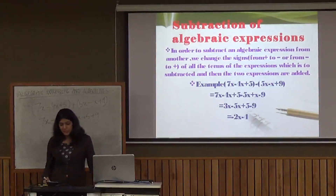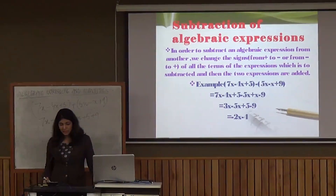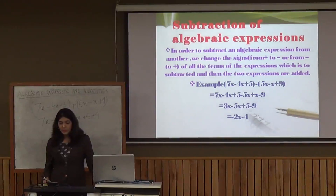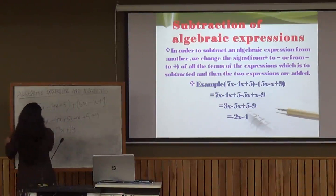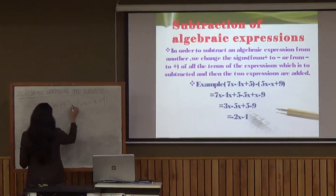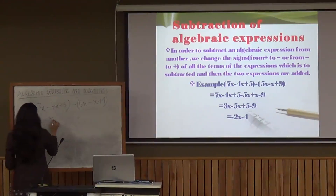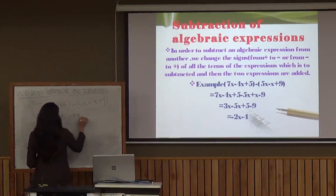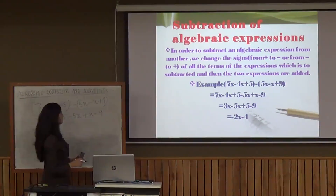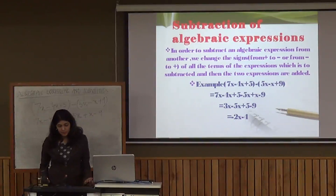Let's move on to subtraction of algebraic expressions. To subtract one expression from another, we change the signs of all terms in the expression being subtracted — plus to minus or minus to plus — and then add the two expressions. For example, 7x minus 4x plus 5 minus (5x minus x plus 9): opening the second bracket with sign change, and after solving, we get minus 2x minus 4 as the answer.